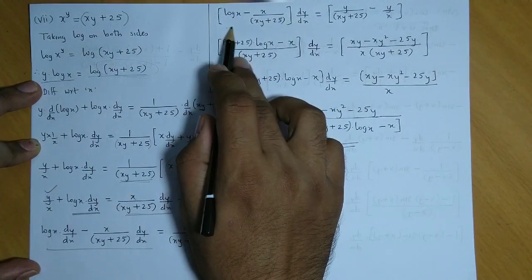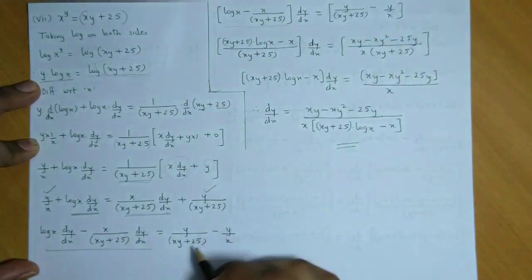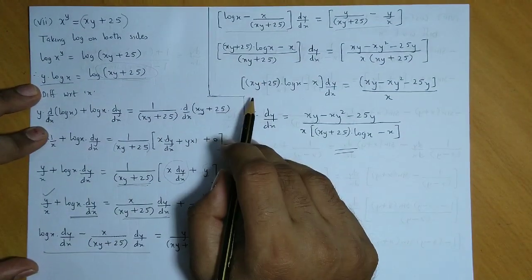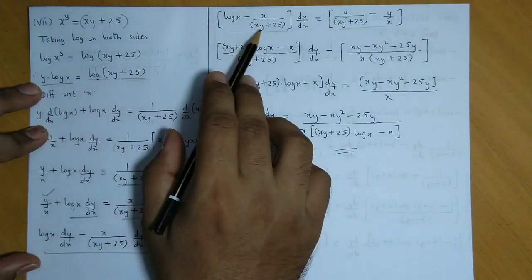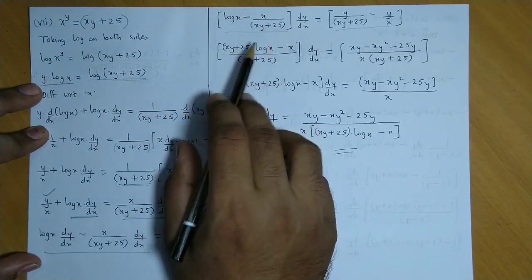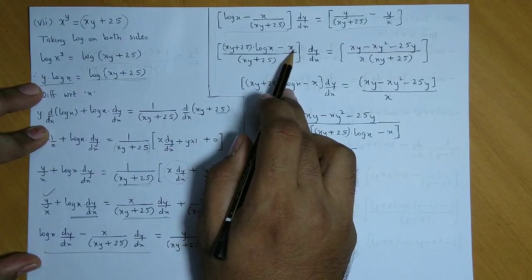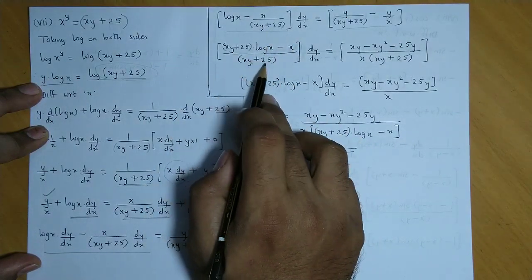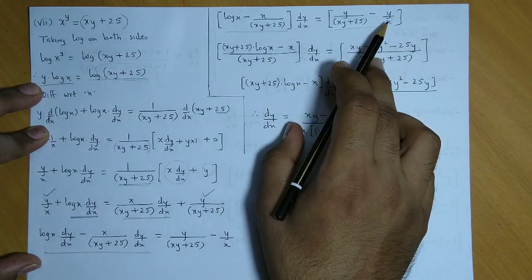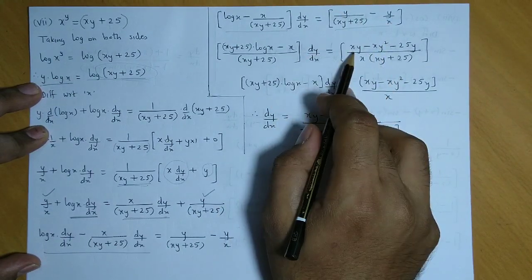So dy by dx common, taking dy by dx common, we get this term minus this term, and the right hand side remains as it is. Next step would be equalizing the denominator. So we equalize the denominator. Log x multiply by xy plus 25, minus x upon xy plus 25. And on the right, similarly, this side x into y, that is xy.